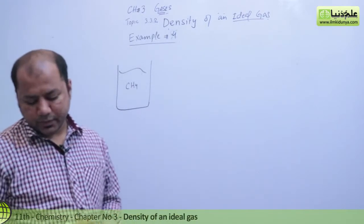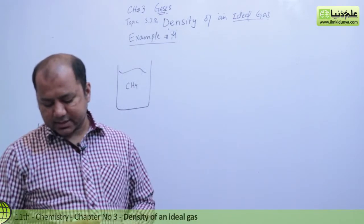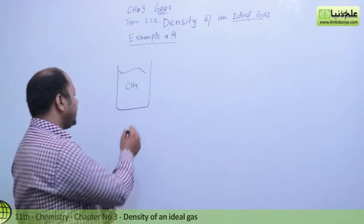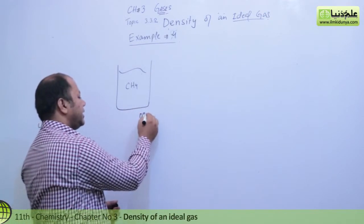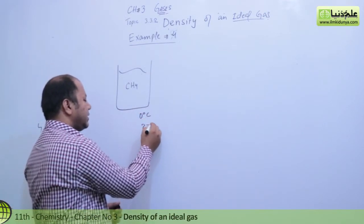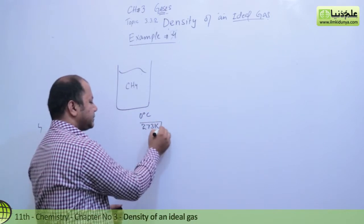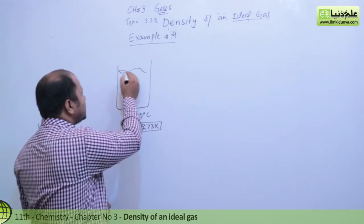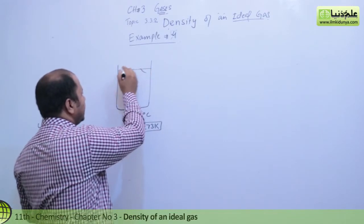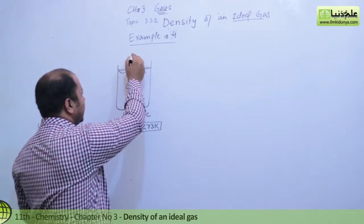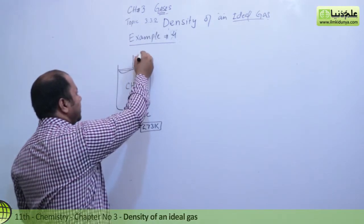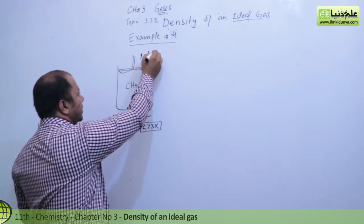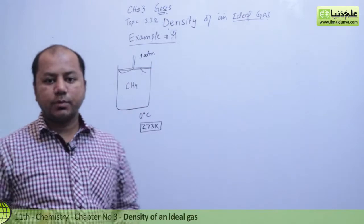Students, the methane gas is at zero degree temperature, which means 273 Kelvin temperature. The pressure on the gas is 180 atm.